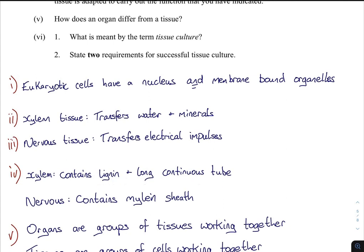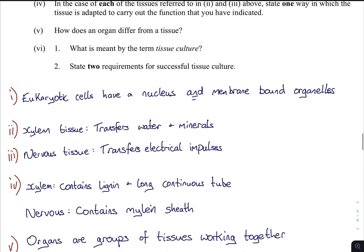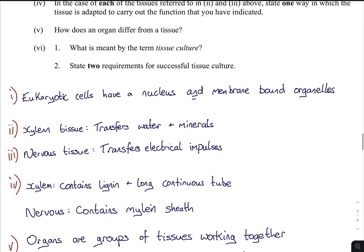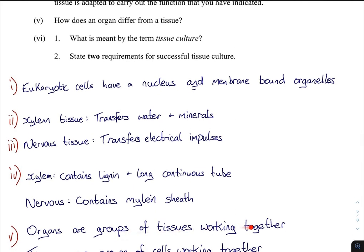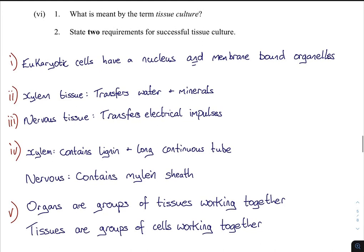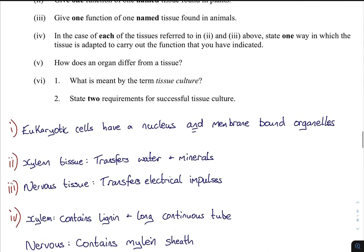For the nervous system, it contains the myelin sheath which is responsible for insulating the electrical impulses. How does an organ differ from a tissue? Organs are groups of tissues working together, whereas tissues are groups of cells working together. Define both — there are no marks shown so go into detail if you're unsure.